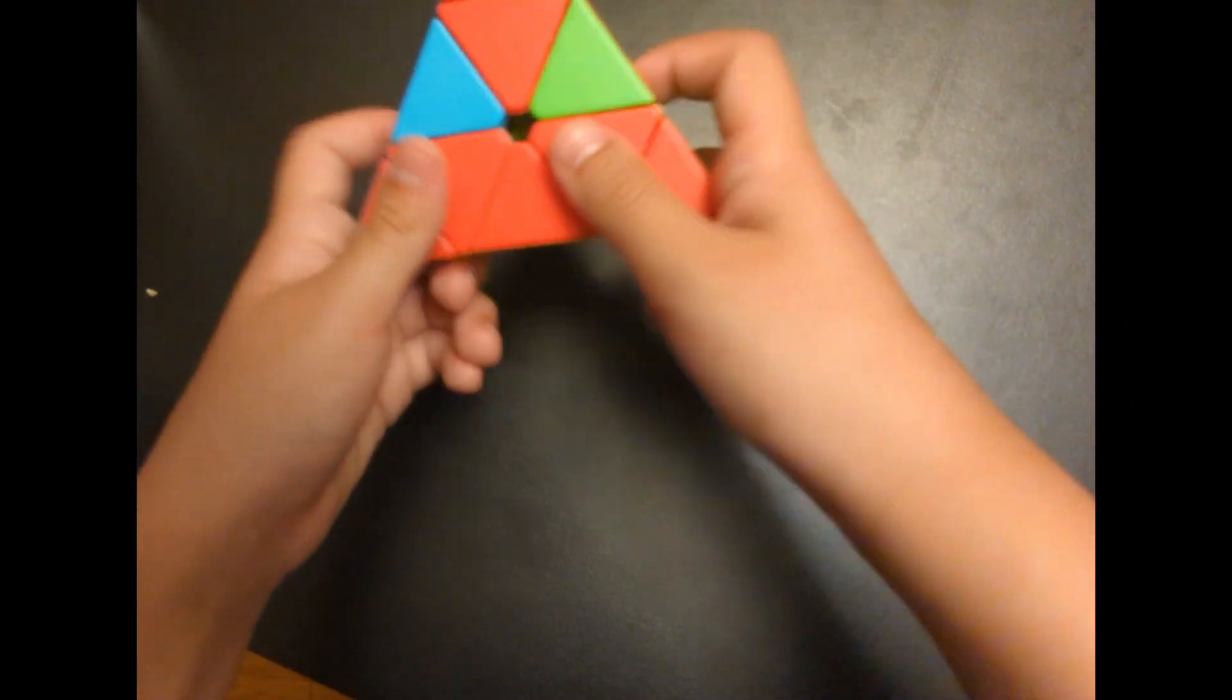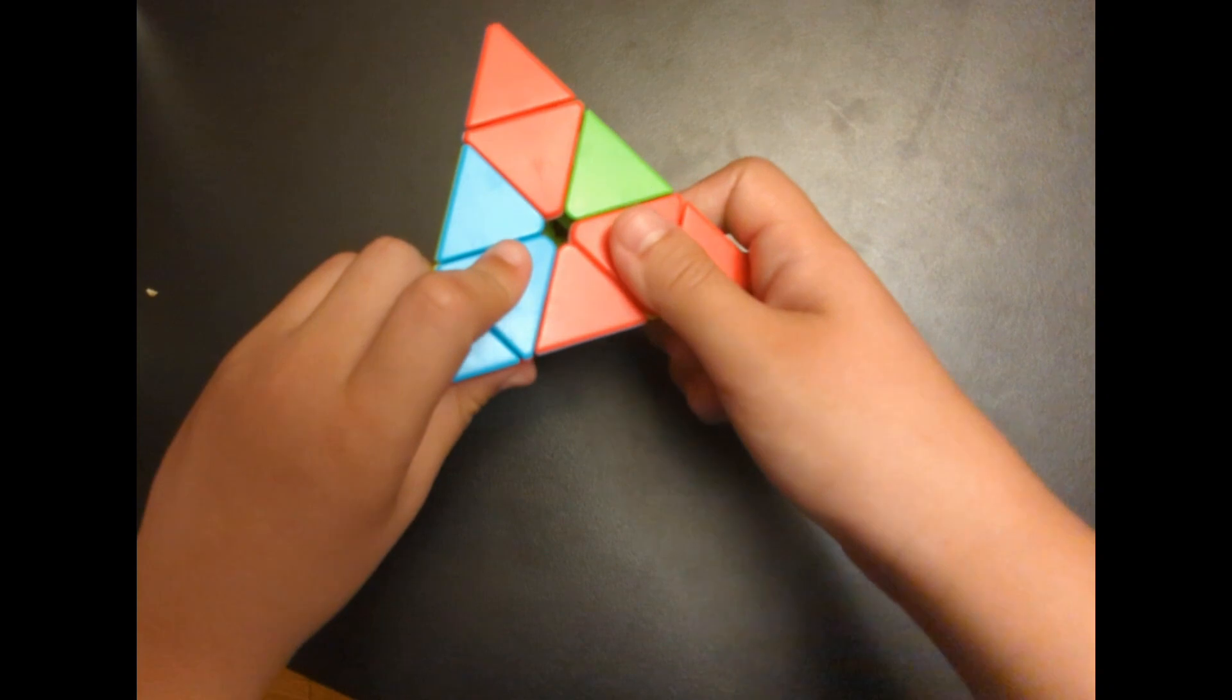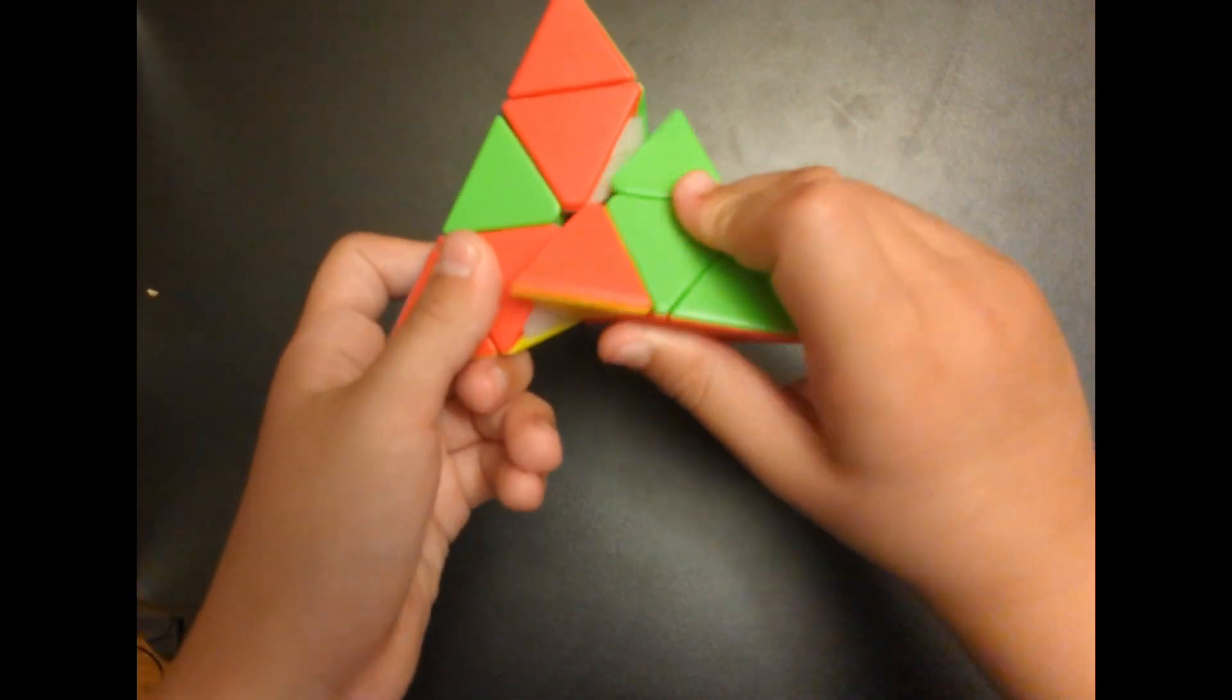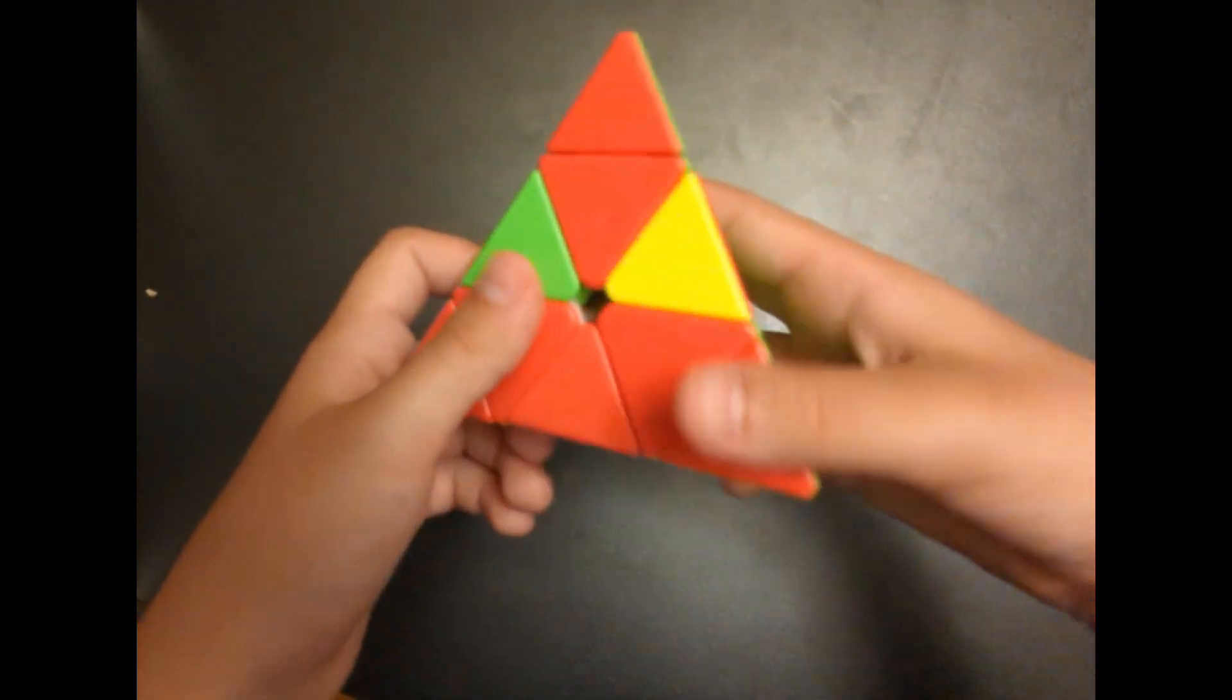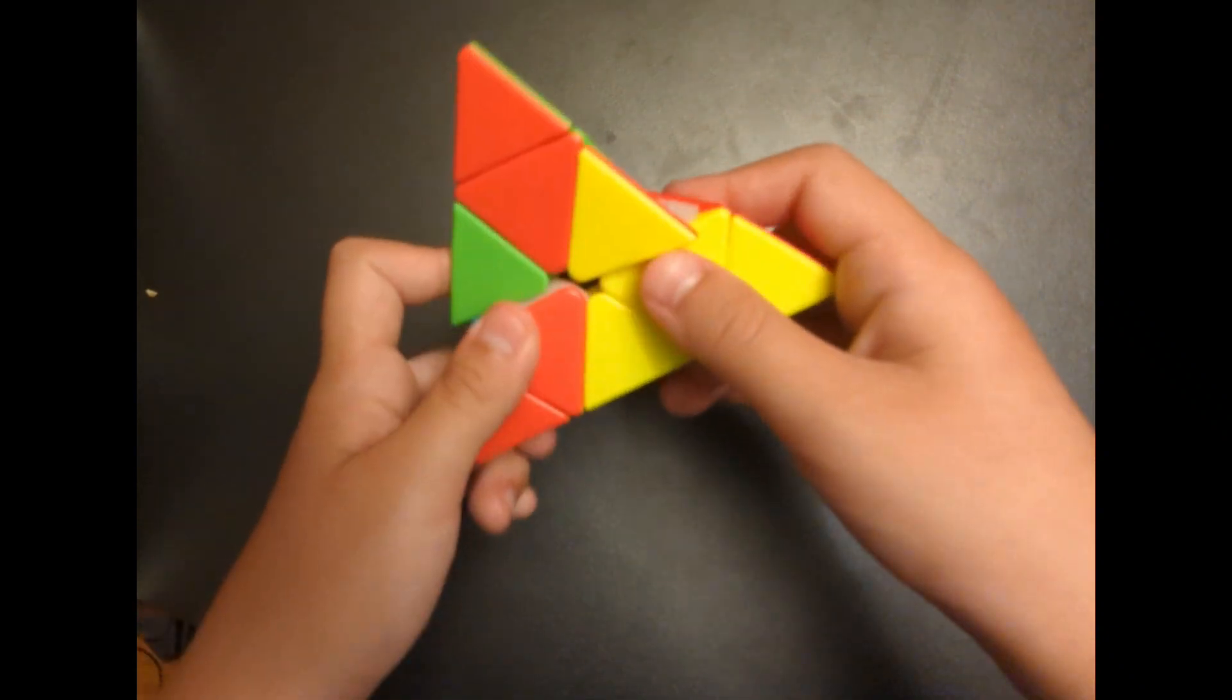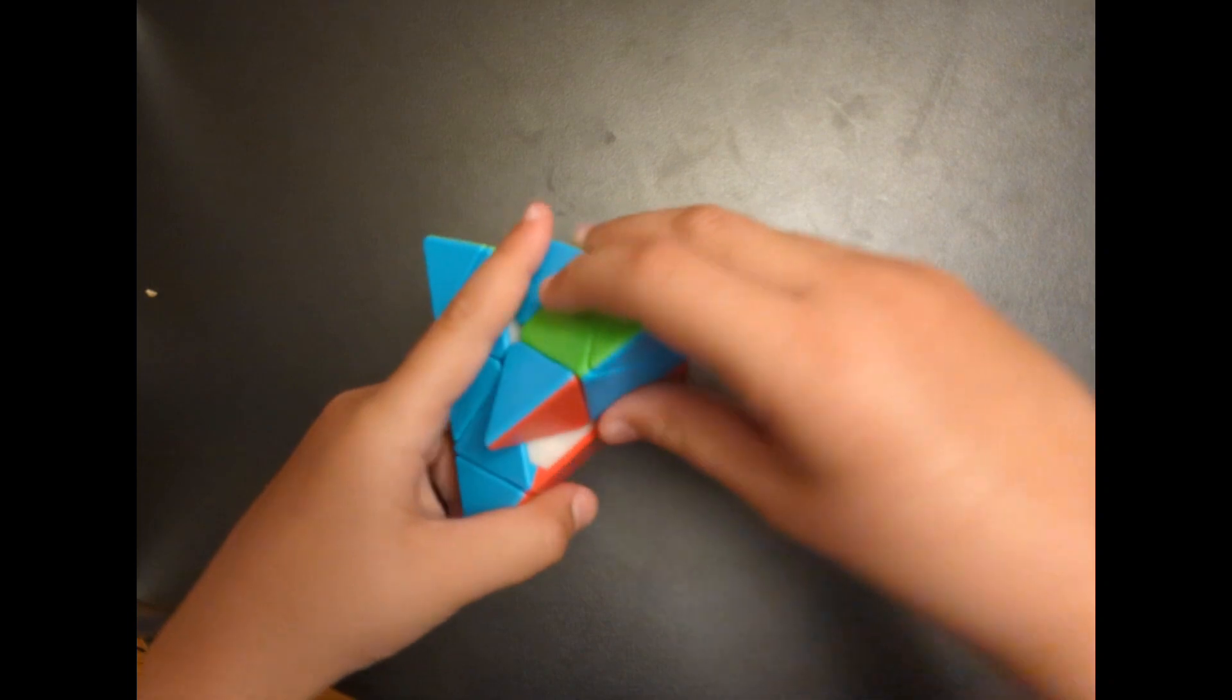And what you're gonna do is this algorithm. Down on the left, down on the right, up on the left, up on the right. And then you're gonna put that piece in. And there. It's like this.